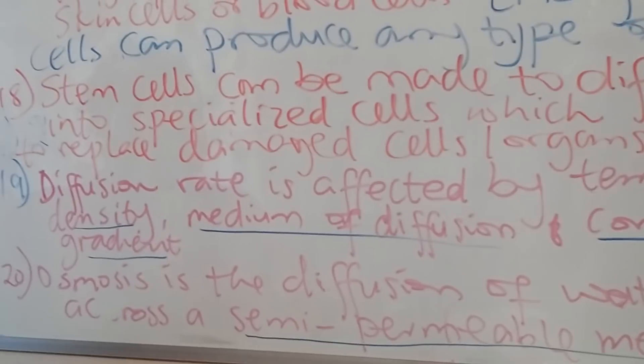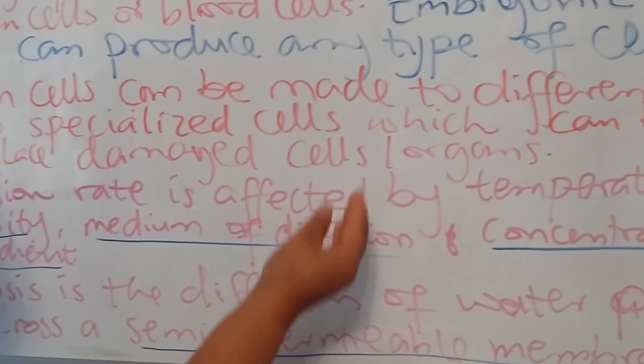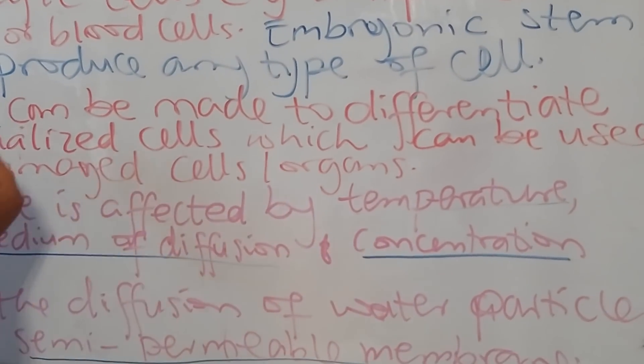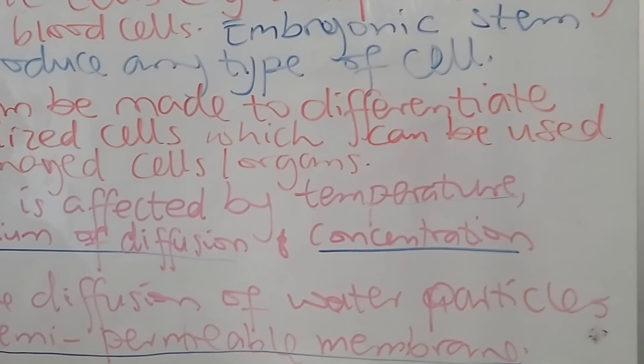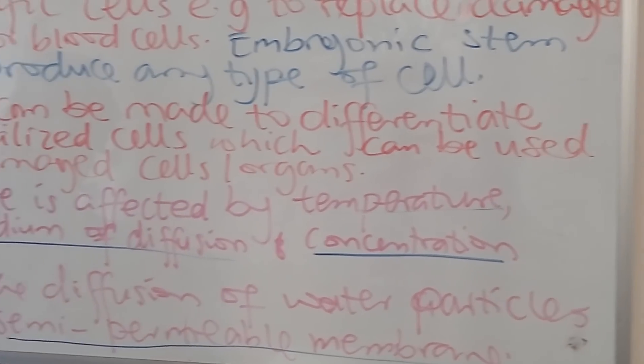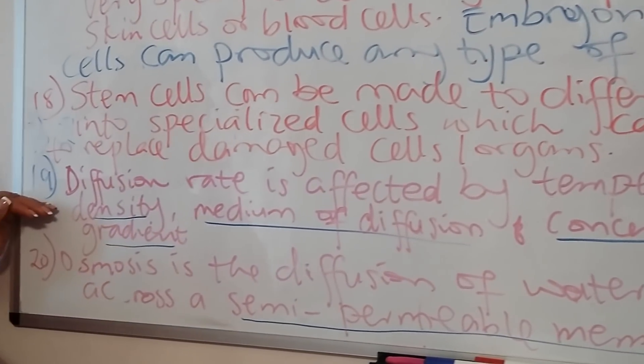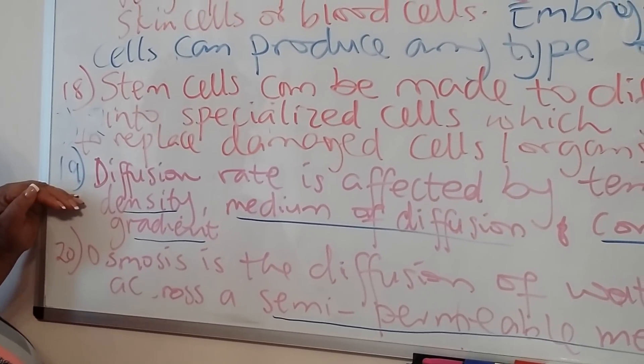Stem cells are highly used in the field of medicine. They can be made under certain conditions to differentiate into specialized cells which can be used to replace damaged cells or organs. Question 19 talks about diffusion rate—to state the factors which affect diffusion.